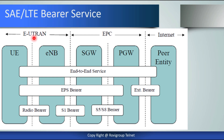The SAE LTE bearer service: the E-UTRAN consists of the UE and eNodeB, and the Evolved Packet Core consists of the serving gateway and packet gateway. The UE connects with a peer entity — this is called the end-to-end service. Between the UE and the PDN gateway is the EPS bearer. An EPS bearer uniquely identifies traffic flows that receive a common quality of service treatment between a UE and the PDN gateway. PDN gateway stands for Packet Data Network Gateway.